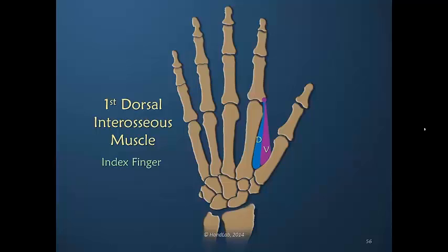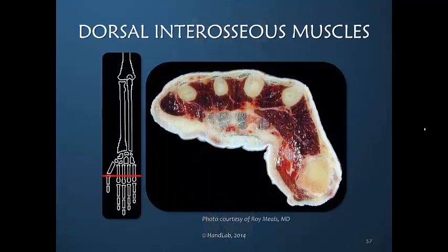The index finger has the largest muscle, which is the first dorsal interosseous. There are still dorsal and volar bellies, usually primarily inserting into bone but sometimes sharing some fibers into the dorsal apparatus. The volar belly is the oblique belly and is significantly larger than the dorsal belly, which is parallel to the first metacarpal. Looking at the cross-section, we can see clearly how much larger it is compared to the others.